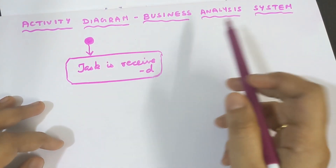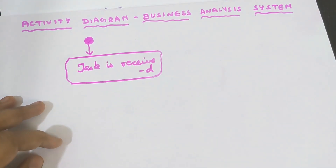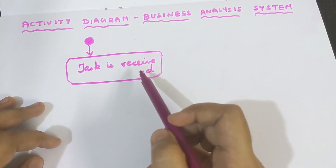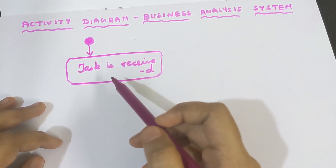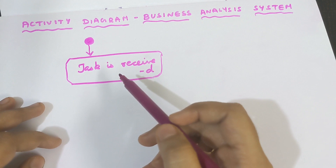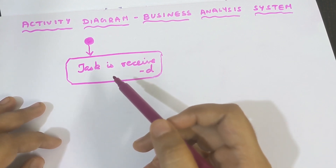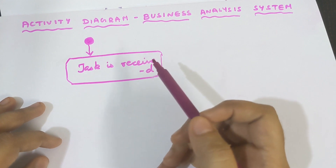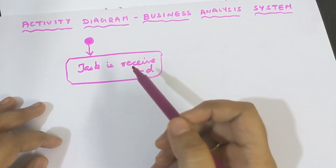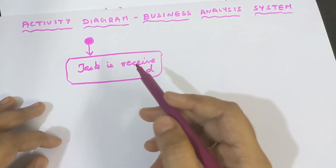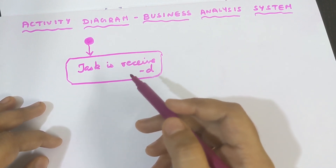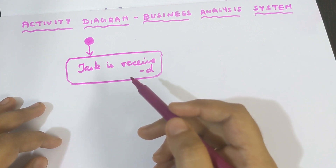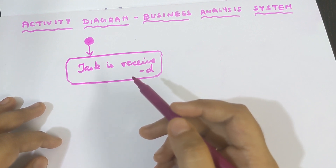What is the entire process for this business analysis system? First, you start the activity. Next, the task is received — the manager receives the task from the client. Next, the manager goes through the task given by the client. Then the manager assigns the task to the employee. After assigning the task, the manager gets into a team call and explains the task to the employee — what has to be done, what the exact requirement is. Everything is discussed and the manager guides the employee.